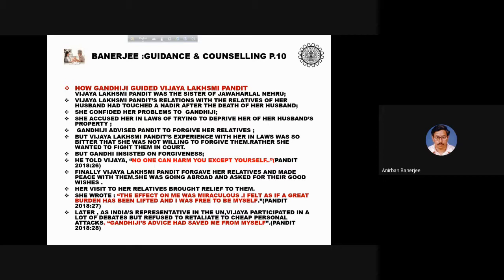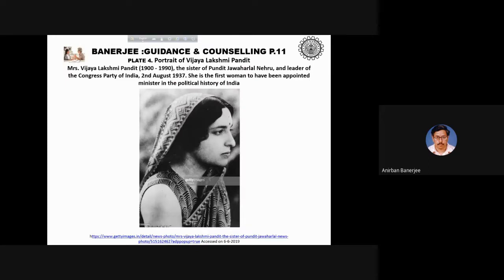She was going abroad and asked for their good wishes; her visit brought relief to them. She wrote, 'The effect on me was miraculous. I felt as if a great burden had been lifted and I was free to be myself.' Later, as India's representative in the UN, Vijaya participated in many debates but refused to retaliate to cheap personal attacks, saying 'Gandhiji's advice had saved me from myself.' This account comes from her autobiographical essay published in Reader's Digest. She was the first woman appointed minister in the political history of India.